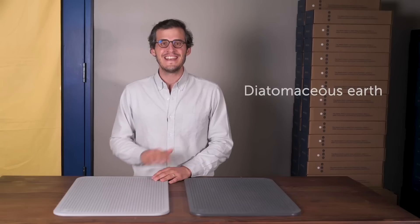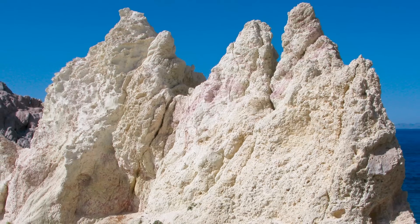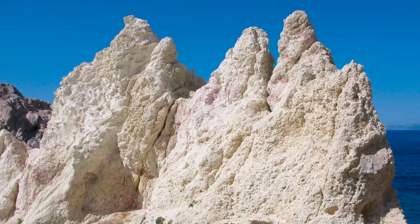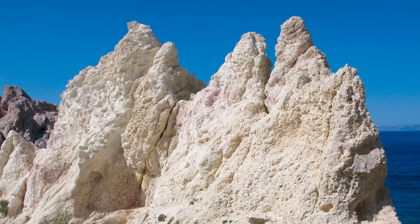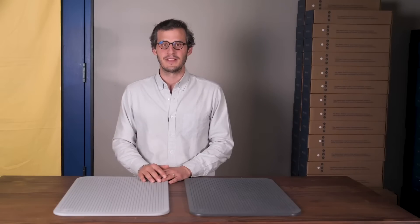Diatomaceous earth is a naturally occurring silica-based material. In simpler terms, it's a special blend of crushed stones and algaes commonly found in waterbeds and deserts. As soon as we discovered this incredible material, we knew we had to make something with it.